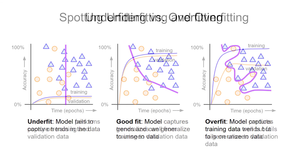The easiest way to spot underfitting and overfitting is to look at how well the model performs on the training data versus the validation data. You could also use the test set instead of the validation set. But if you find problems with the model on the test data and tweak the model, you've introduced some bias into the model from the test set. Because of this, it's best to use the validation set to spot problems and make adjustments before using the test set.